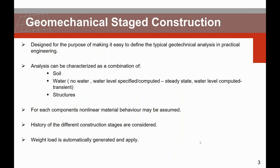Next to the groundwater flow aspects, today we will also use a geomechanical stage construction. This application was introduced in Diana 10.03, our current commercial version, and has been designed to make it easy to define typical geotechnical analyses in practical engineering. Such analyses can be characterized as a combination of soil, water and structure, where for each component non-linear material behavior may be assumed and where the history of different construction stages is considered. Considering the water pressure, there are four types of stages: no water present, water level specified, water level computed steady state, and water level computed transient — which is the one we will use in our live demo today.